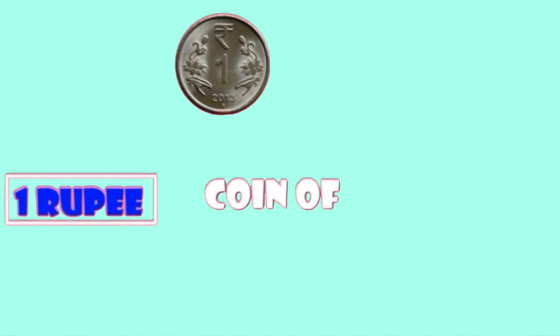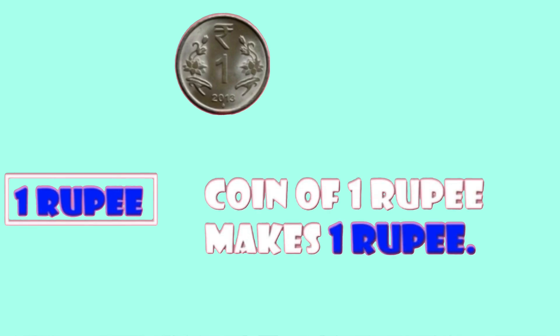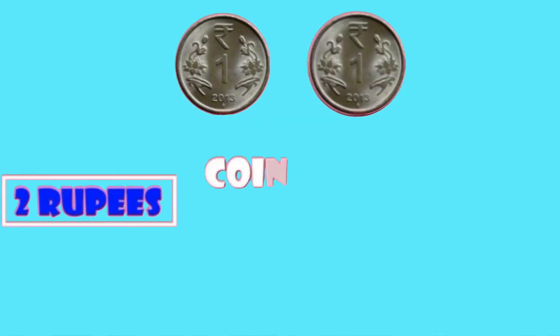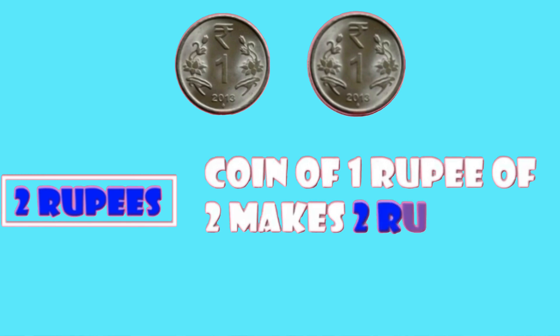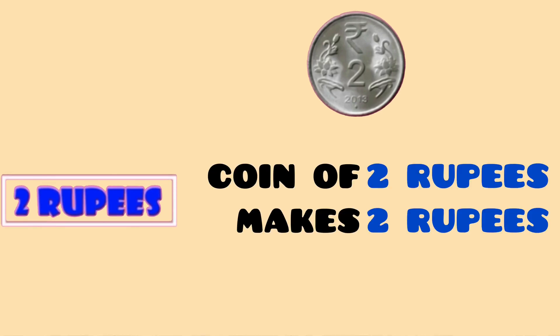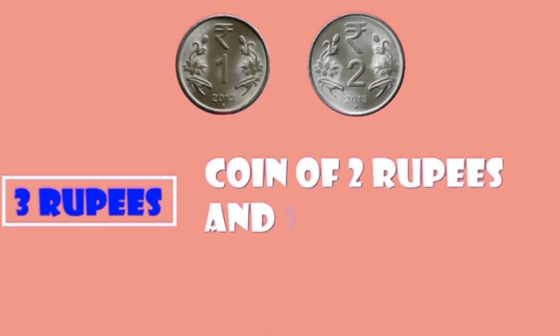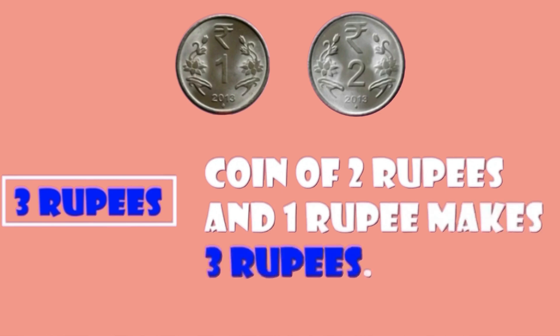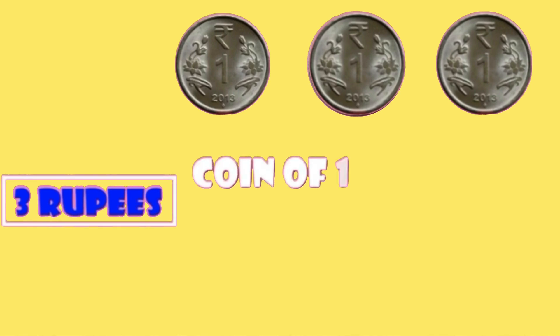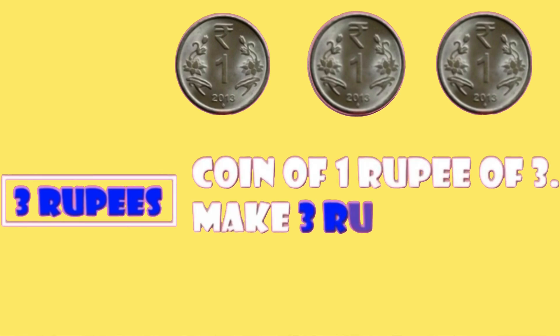Make the given amount using different combinations of coins. One rupee: one coin of one rupee makes one rupee. Two rupees: one coin of two rupees makes two rupees, or two coins of one rupee makes two rupees. Three rupees: one coin of two rupees and one coin of one rupee makes three rupees, or three coins of one rupee makes three rupees.